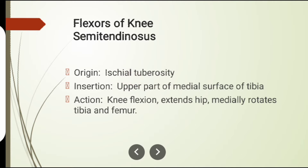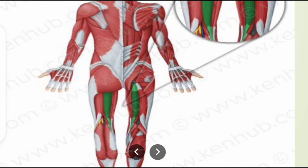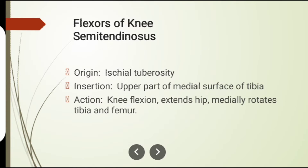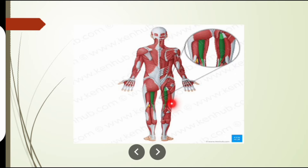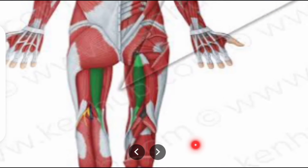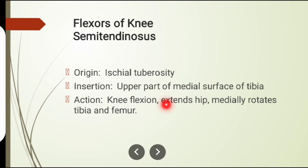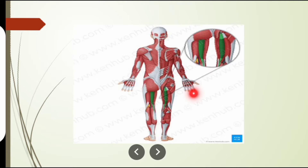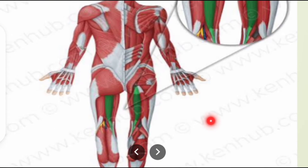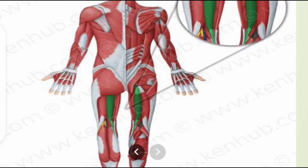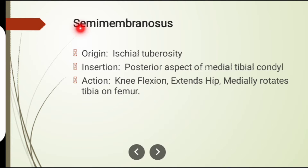Semitendinosus muscle: its origin is from the ischial tuberosity. The muscle shown in green is the semitendinosus. Its insertion is on the upper part of the medial surface of the tibia. The action is knee flexion, hip extension, and medial rotation of the tibia and femur.